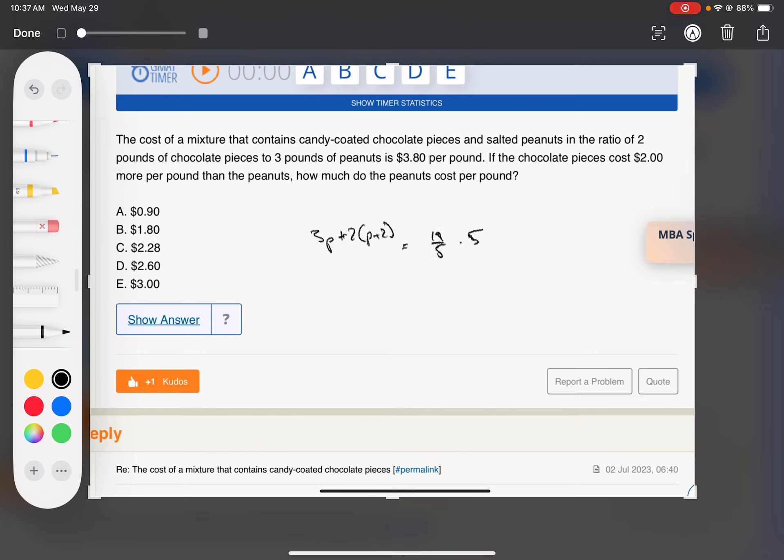Notice it becomes 19/5 times 5 - that 5 cancels nicely. They reward you for using fractions. 5P equals 15, P equals 3, and we're done. Turn your decimals into fractions, make life easy.